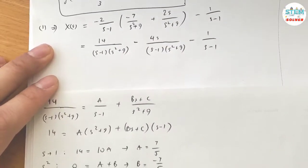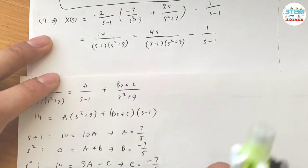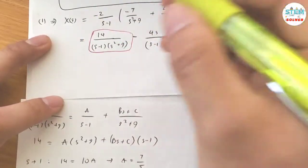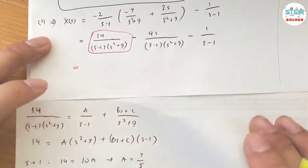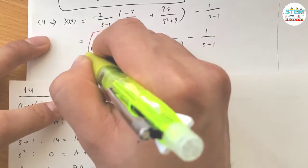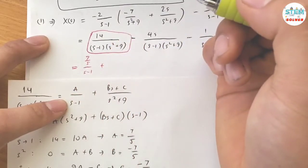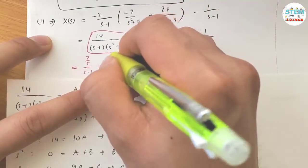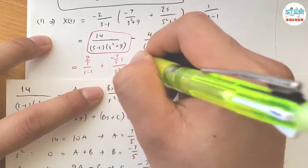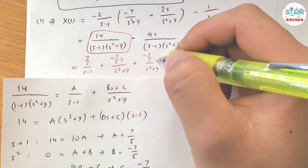After the decomposition, we find the values for A, B, and C. The expression becomes: A over (s minus 1), which is 7/5, over (s minus 1); plus B, which is negative 7/5, times s over (s squared plus 9); plus C, which is negative 7/5, over (s squared plus 9).